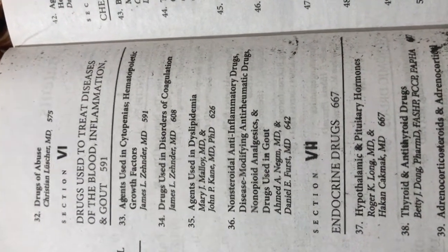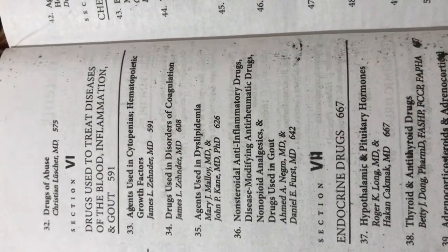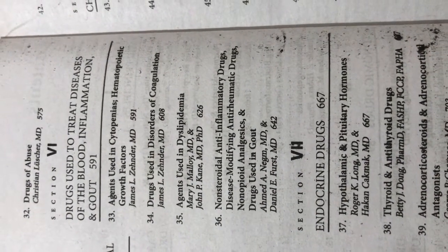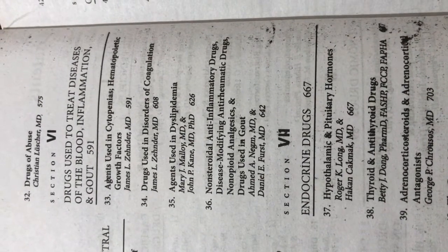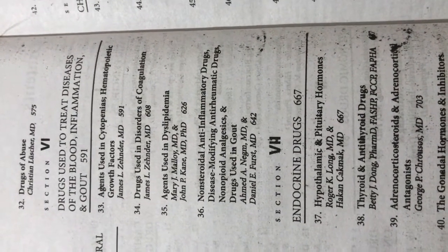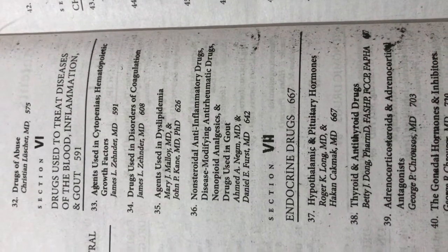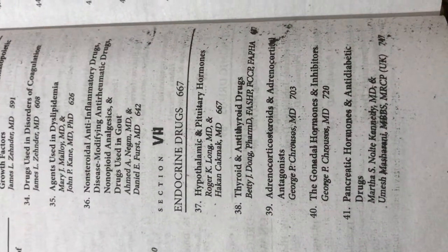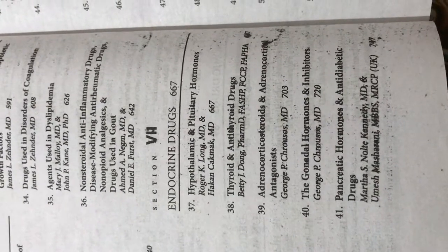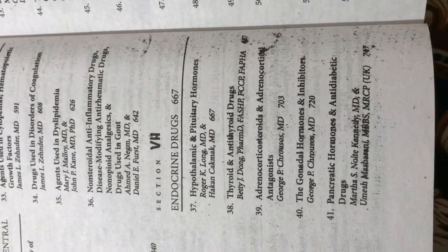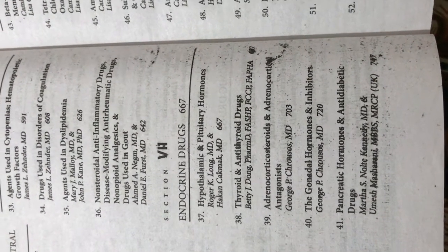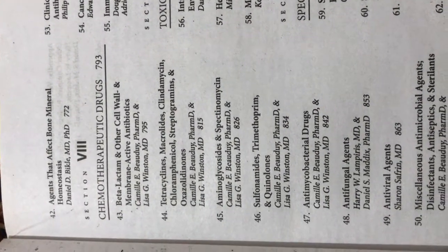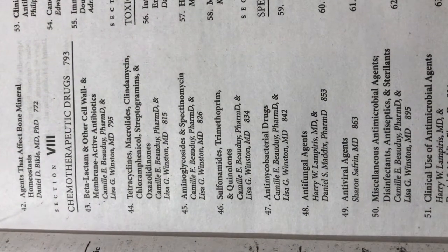Section six covers drugs used to treat diseases of the blood and inflammation. Chapter thirty-three covers agents used in cytopenias and hematopoietic growth factors, thirty-four covers drugs used in disorders of coagulation, thirty-five covers agents used in dyslipidemia, and thirty-six covers non-steroidal anti-inflammatory drugs, disease-modifying antirheumatic drugs, non-opioid analgesics, and drugs used in gout. Section seven covers endocrine drugs: hypothalamic and pituitary hormones, thyroid and antithyroid drugs, adrenocorticosteroids, chapter forty gonadal hormones and inhibitors, forty-one pancreatic hormones and anti-diabetic drugs, and forty-two agents affecting bone mineral and homeostasis.